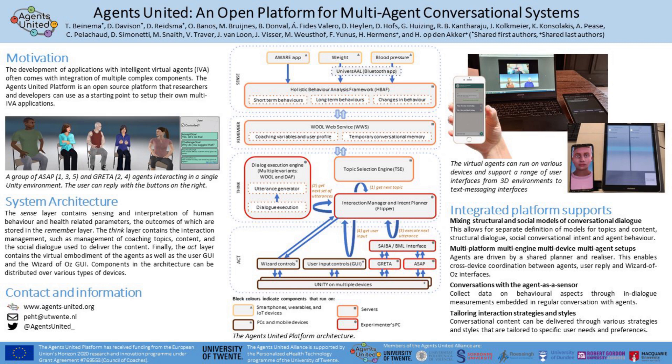The Agents United platform seamlessly integrates the previously discussed components. A first advance of the state of the art lies in combining expertise models and insights from the fields of argumentation and social conversation. In the Agents United platform, each component in the think layer expands a selected topic into more detailed steps. Ultimately, the execution of a single utterance is orchestrated by the interaction manager, which may involve multiple social conversational moves that include turn-taking, back-channeling, and detection of completion or interruption.